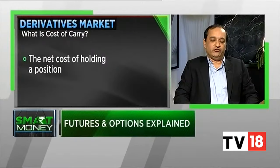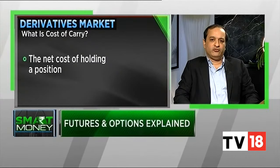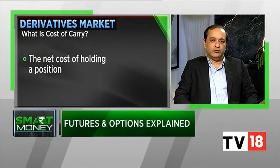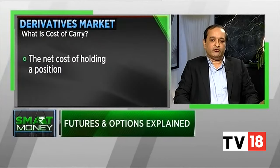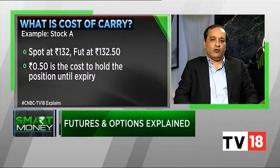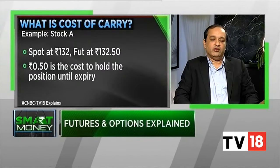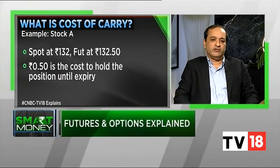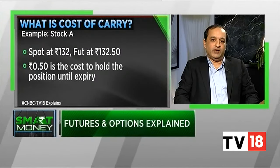Cost of carry is basically the net cost which you have to pay in order to hold an asset to maturity. Going by the same example of Tata Motors, the stock price is 132 and the futures price is 132.5. The difference, which is 0.5, is the cost you have to pay in order to hold that asset until maturity on 29th of October. If you calculate it in terms of percentages, that would be about 0.38 or 0.4% — that is the cost of carry.